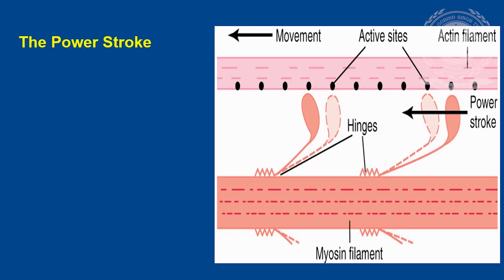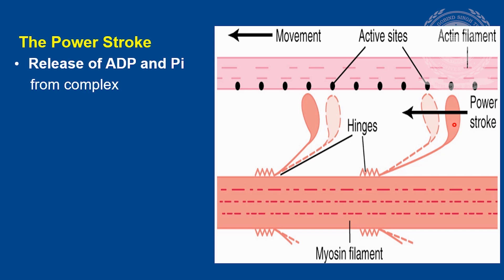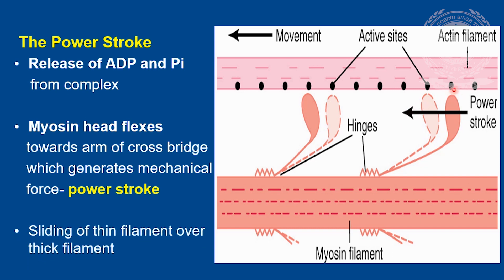The next important step is the power stroke. When myosin head binds to actin, the energized head immediately releases ADP and inorganic phosphate from the complex. With that, the myosin head flexes at the hinge towards the arm of the cross-bridge, generating mechanical force — this is called the power stroke. Thus, the actin filament is pulled and slides over the myosin filament towards the center of the sarcomere.